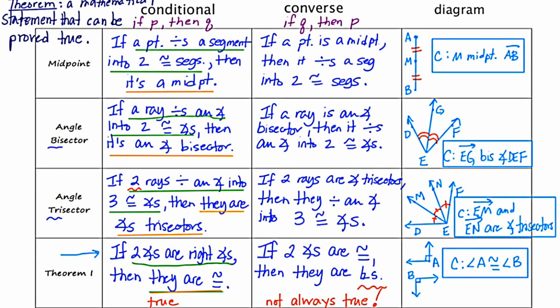So here are the seven essential definitions from chapter 1.5 and the first theorem of many in this course. Hopefully you've written them all down in their conditional form and their converse form, and provided an illustration for each. Tomorrow's class will extend upon this knowledge and hopefully clarify anything still confusing.